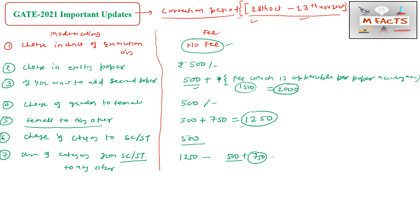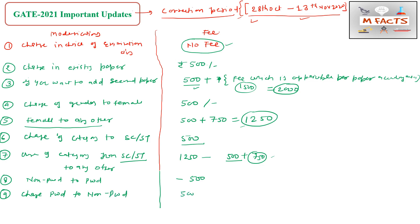The eighth point is that you can also change from non-PWD to PWD candidate. Conversely, if you have wrongly filled the PWD category and want to change from PWD to non-PWD, you have to pay 500 plus 750, which equals 1250 rupees. This is the payment applicable for changing PWD to non-PWD.